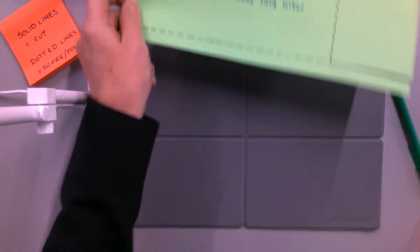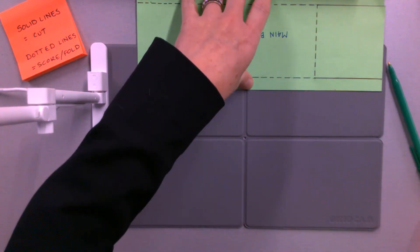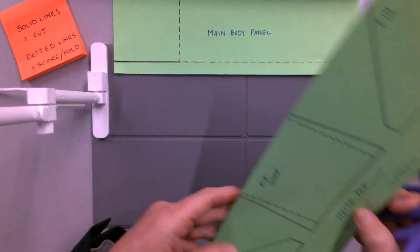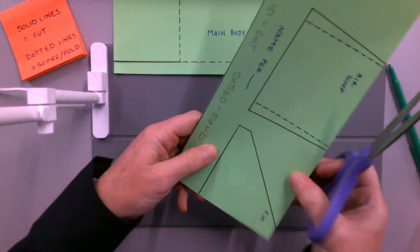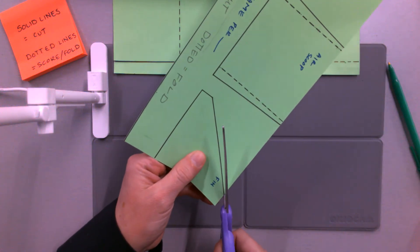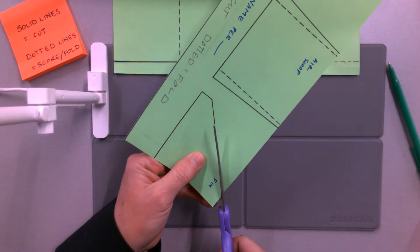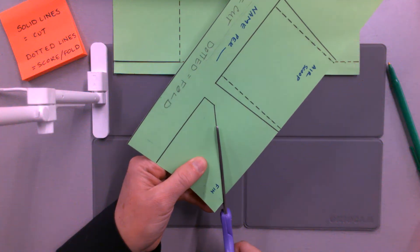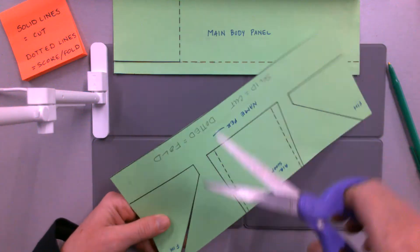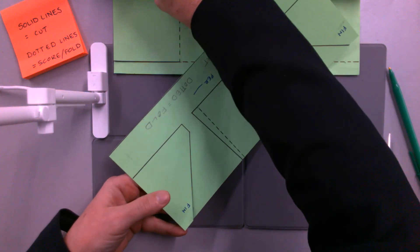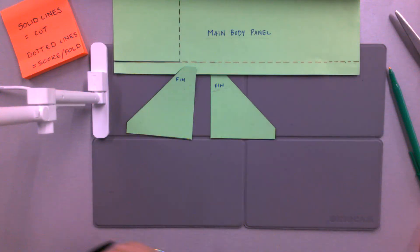There's my main body panel, and I can just put that aside. I'll do my first fin. I'm just going to pause the video for a moment. I've got my main body panel and my two fins cut out.